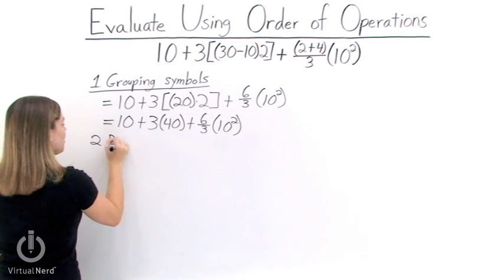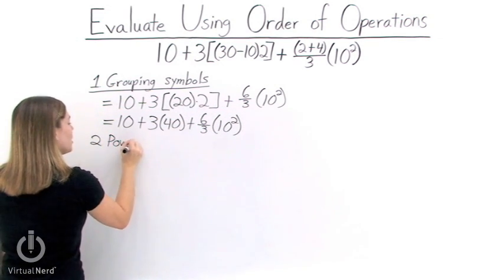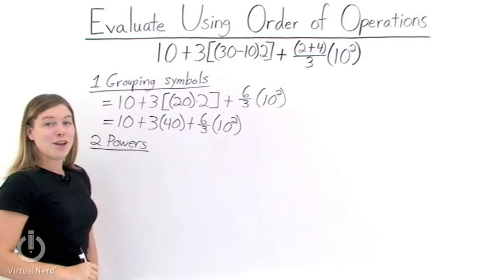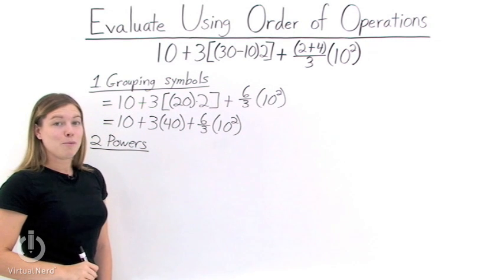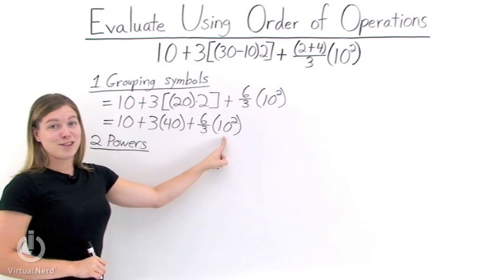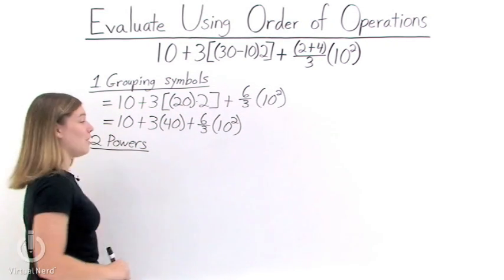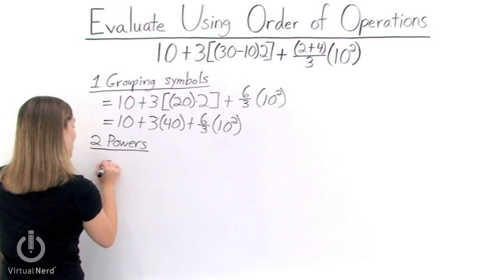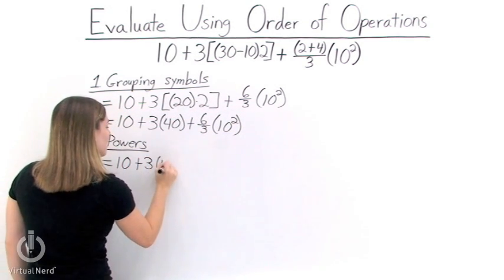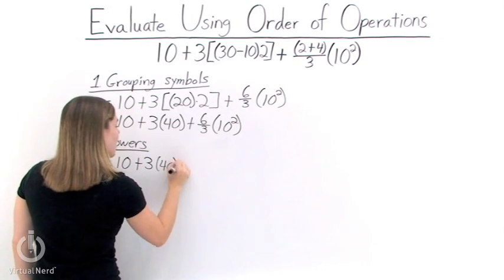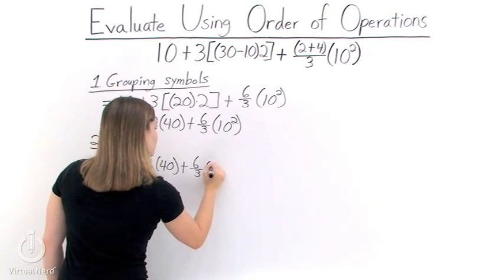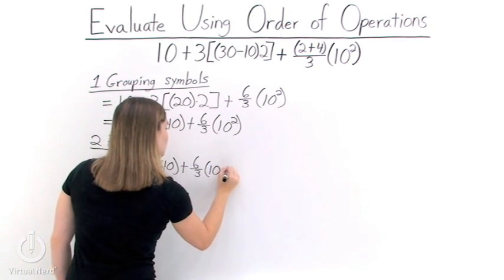Step number 2 is to eliminate any powers that we have in our problem. In our problem, we only have one power, and it's way at the end — 10 squared. So in order to evaluate it, we need to rewrite everything else and then evaluate our power. So 10 squared becomes 100.